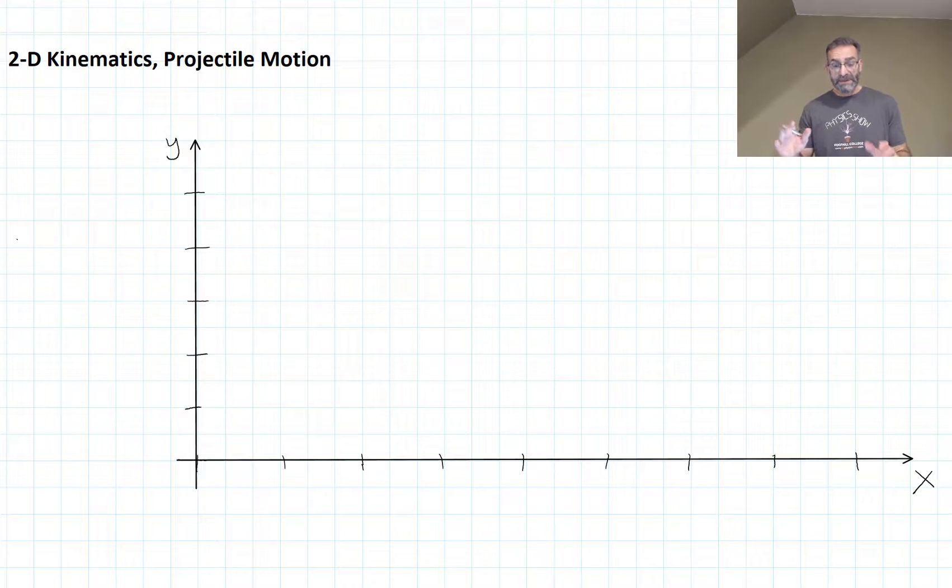So at t equals zero, where's our object? It's at the origin and it has some velocity in this direction. Let's not worry about that right now. One second later, our strobe light goes off. Where's our object? It's over here now.